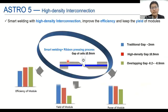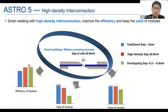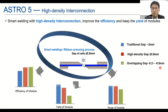The fourth key point is high-density interconnection technology. Compared to traditional cell gaps of about 2 millimeters, the new technology uses a small gap of less than 0.9 millimeters. This design improves module efficiency, keeps module power, and maintains the yield of the module. Compared to overlapping designs with negative spacing, the yield is higher, and in my opinion the reliability is also better than the negative-distance module design.